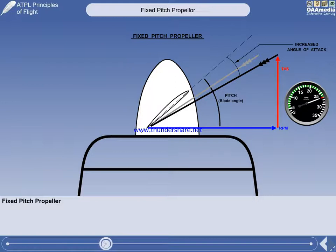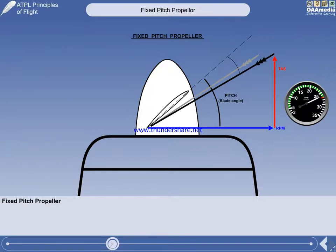For simplicity, we have maintained the same true airspeed, although in practice it will begin to increase. Decreasing the RPM decreases the blade angle of attack.